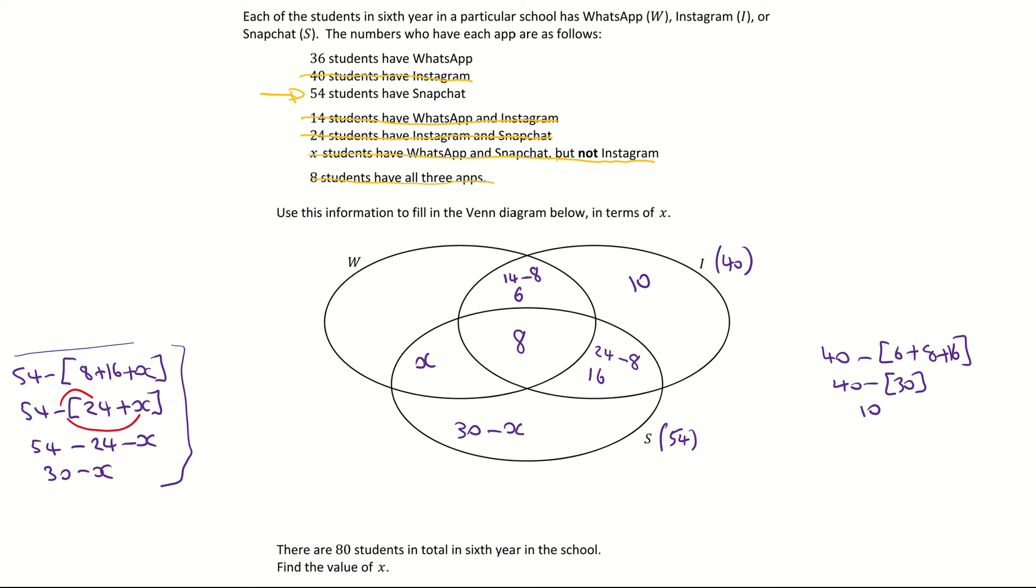So filling in my region it's going to be 30 subtract x. Just be careful there that you don't have a plus x, it's a subtract x. Now the next section is very similar. I'm now looking at the final one which is 36 students have WhatsApp. So I'm going to fill in my 36 here beside the W which stands for WhatsApp. Once again the green highlighter going around it, this full circle must add to 36. To get this region in here I'll need to add the 6, the 8 and the x and subtract them from the 36.